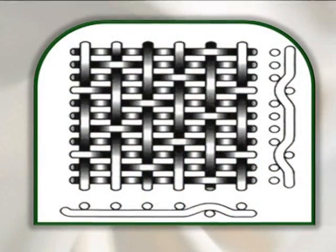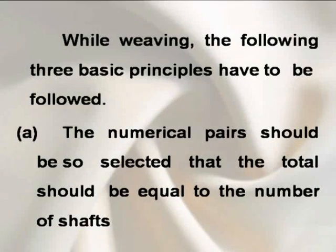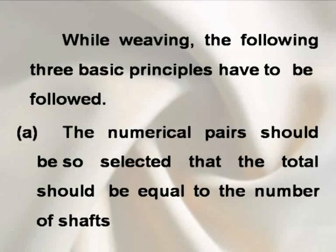This type of weave requires a minimum set of five warps and five wefts. While doing satin weaving, the following three basic principles have to be followed.